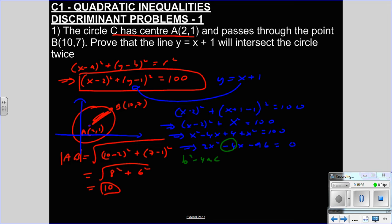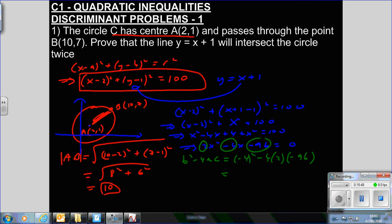B is minus 4, so this is minus 4 squared, minus 4 lots of A which is 2, times minus 96. That gives 16 minus 4 times 2 times minus 96, which equals 784, and 784 is greater than 0. Therefore, two real distinct roots. You see how we've just used inequalities to solve a problem.